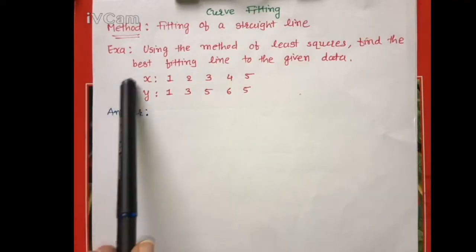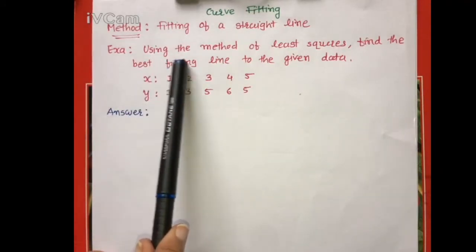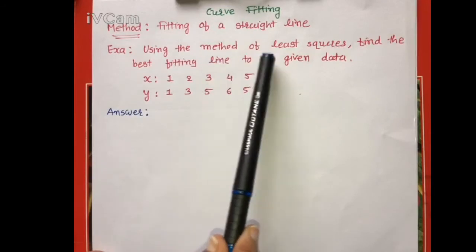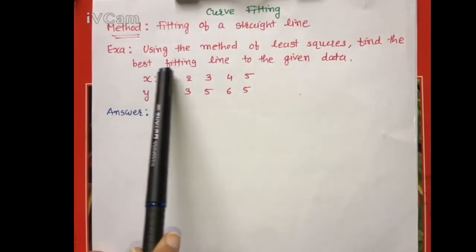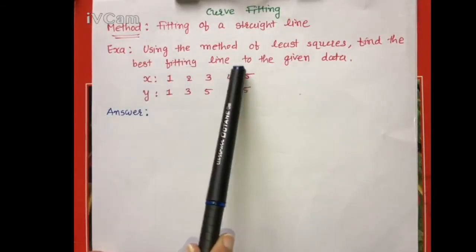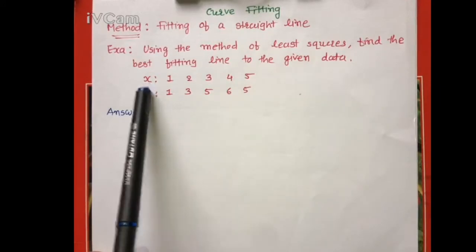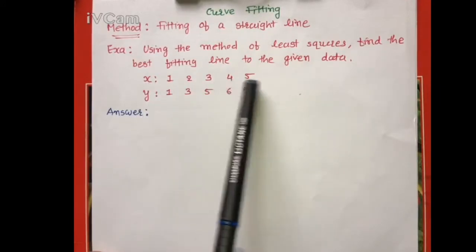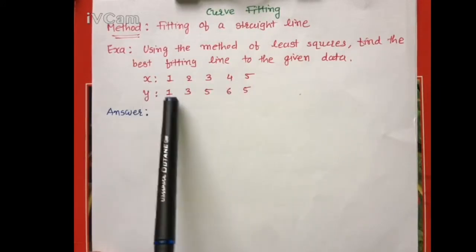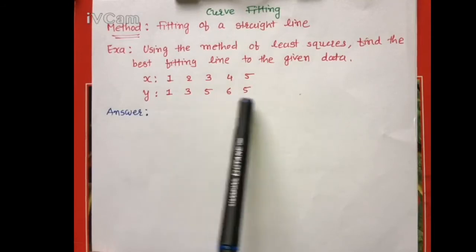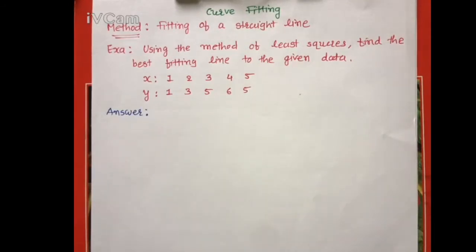Here the example is: using the method of least squares, find the best fitting line to the given data. The x values are given as 1, 2, 3, 4, 5 and the y values are given as 1, 3, 5, 6, 5. The equation to be fit is not specified, so we must assume one.